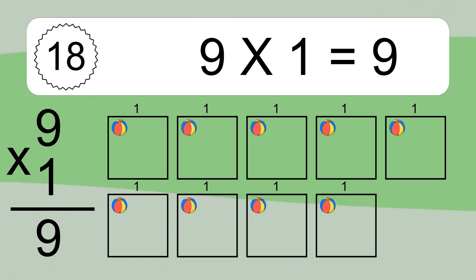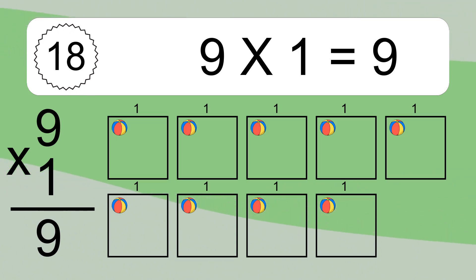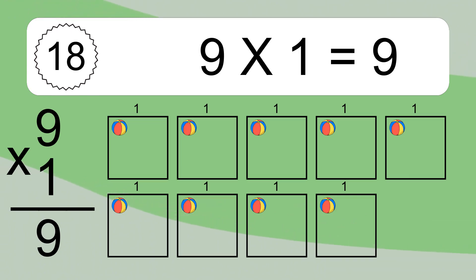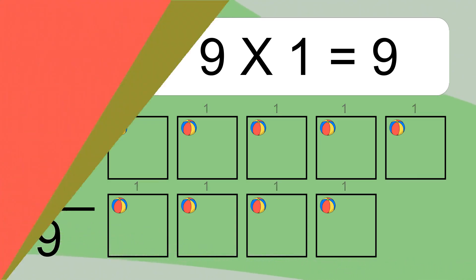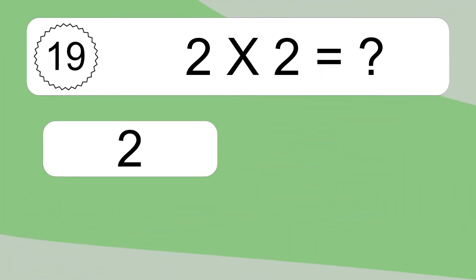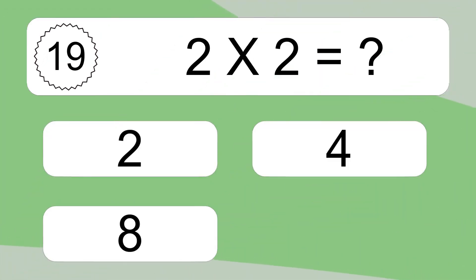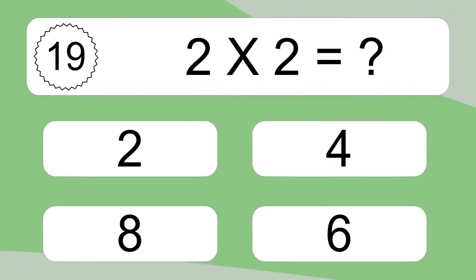We have 9 boxes, and each box has 1 colorful ball inside. If you count all the balls in all the boxes together, you will have 9 times 1 balls. This equals 9 balls.